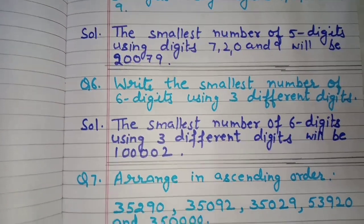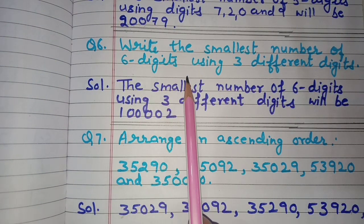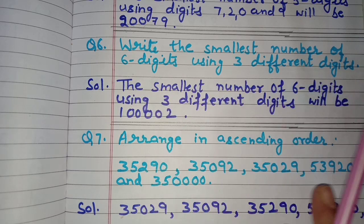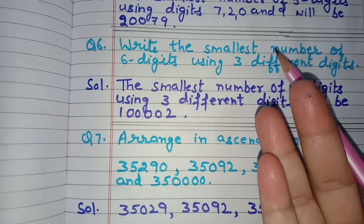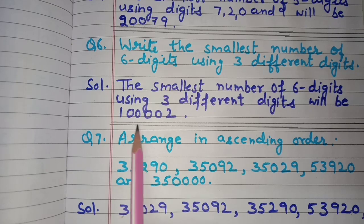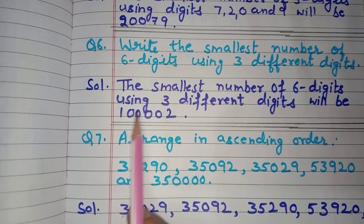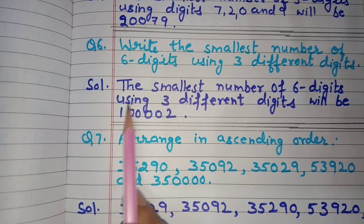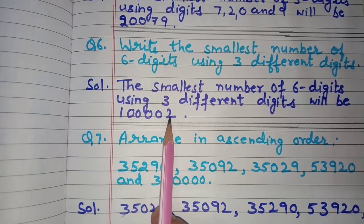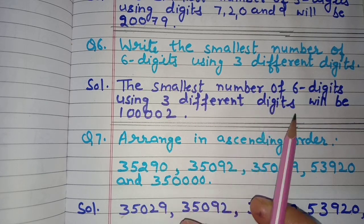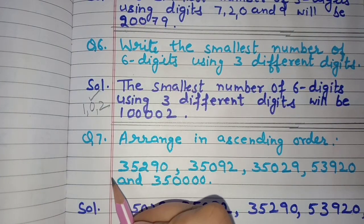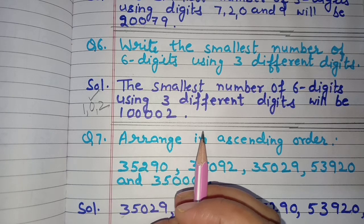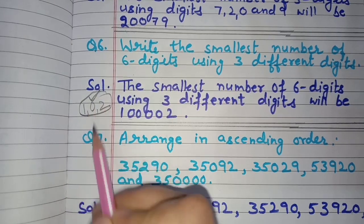Next is question number six: write the smallest number of 6 digits using 3 different digits. The smallest 3 different digits are 0, 1, and 2. We can't start with 0, so we begin with 1, then repeat 0 four times, then write 2 at the end. So 1,00,002 is the smallest 6-digit number using 3 different digits: 1, 0, and 2.